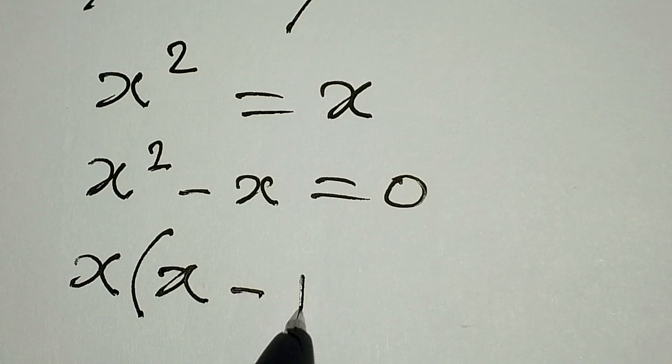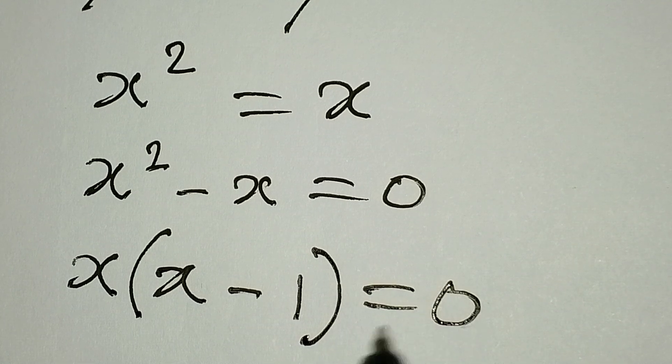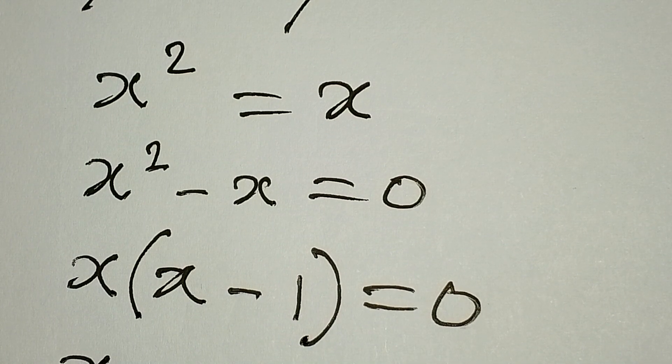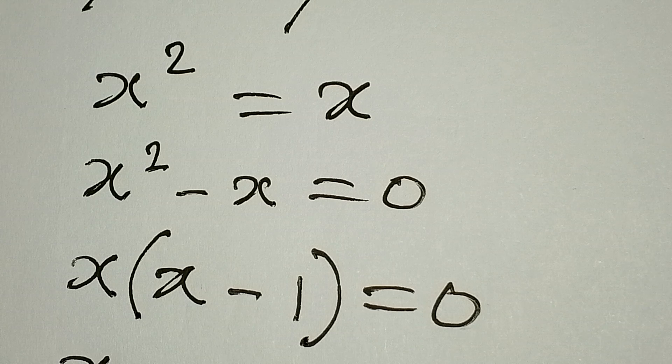Minus x into x is one, so we equate to zero. X now is either equal to zero or x minus one is equal to zero.